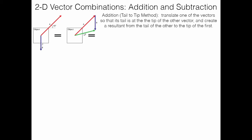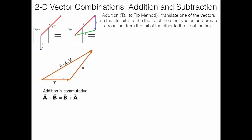Now B's tail is at A's tip — tail to tip. Draw a vector from the first vector's tail to the translated second vector's tip. This vector C equals A plus B. You can add in either order — placing A at the tip of B gives the same magnitude and direction for the resultant. Addition is commutative for two-dimensional vectors, just as in one dimension. Note that the length of the resultant is not equal to the sum of the individual lengths unless the vectors are parallel.